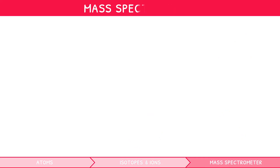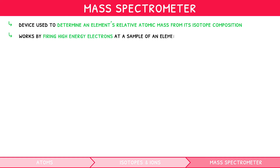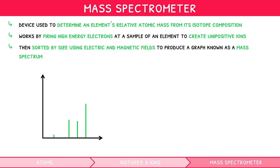A mass spectrometer is a device used to determine an element's relative atomic mass from its isotope composition. It works by firing high-energy electrons at a sample of an element to create unipositive ions. These are then sorted by size, using electric and magnetic fields, to produce a graph known as a mass spectrum. Along the x-axis is the mass-to-charge ratio of the isotopes present within the sample.